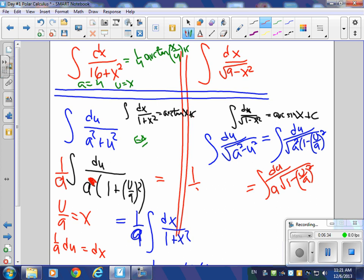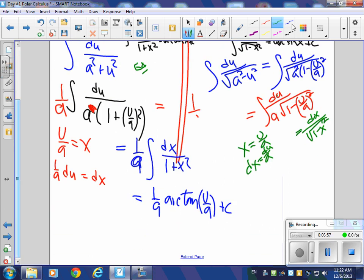Go with that x idea again, where x was u over a, dx is 1 over a du, and I have du over a, so this is going to be dx over square root 1 minus x squared, and what's that integral going to be? The antiderivative of dx over square root of 1 minus x squared, the arcsine of u over a.